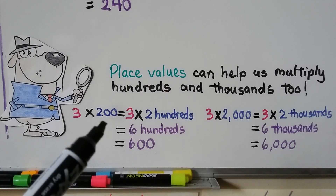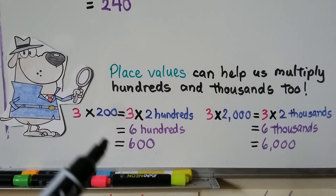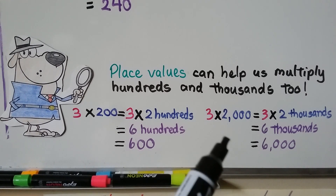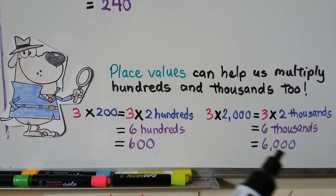Do you notice there were 2 zeros in the factor 200, and there were 2 zeros in the product 600? And here there were 3 zeros in the factor 2,000, and there are 3 zeros in the product 6,000.